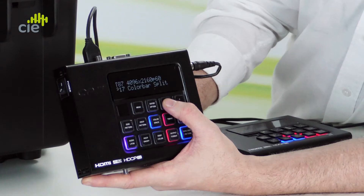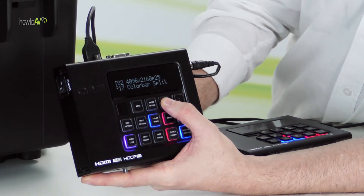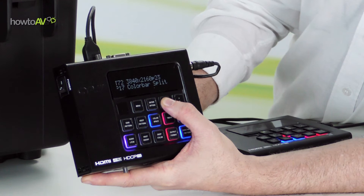Now gradually reduce the output resolution and timing of the XA4 in pattern generation mode. Your picture may now stabilise.